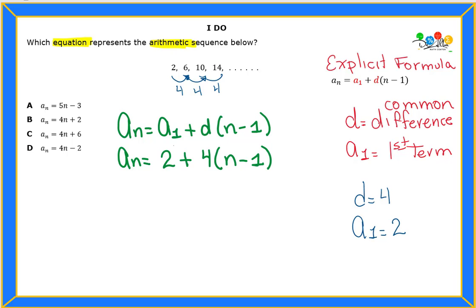So notice how anytime that you have parentheses, you are gonna need to use that distributive property. Which is fine, we got this, you know how to do that. So I have aₙ equals, that 2 is not gonna multiply anything, it's just by itself. Plus 4 times n gives me 4n, and 4 times negative 1 gives me a negative 4. So I can write down minus 4.